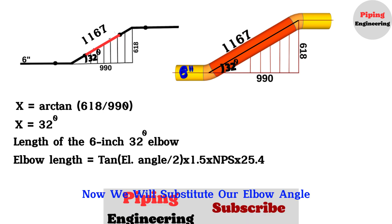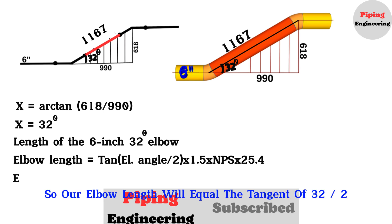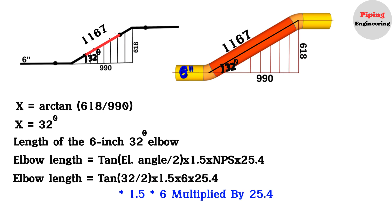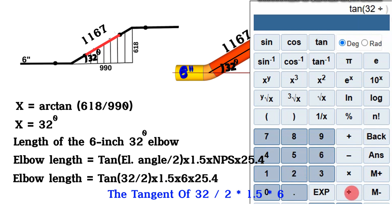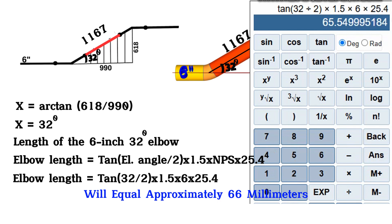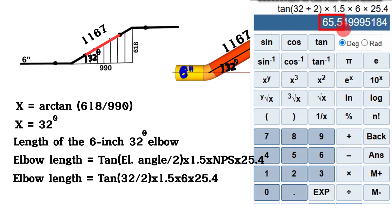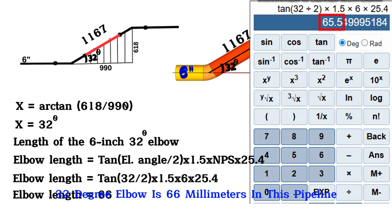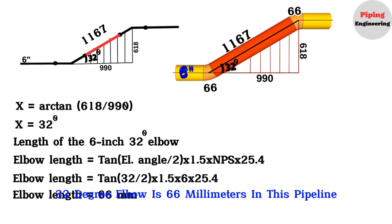Substituting our values into the formula: elbow length equals the tangent of 32 divided by 2, times 1.5 times 6, multiplied by 25.4. Using a scientific calculator, this equals approximately 66 millimeters. So the length of the 6-inch, 32-degree elbow is 66 millimeters.